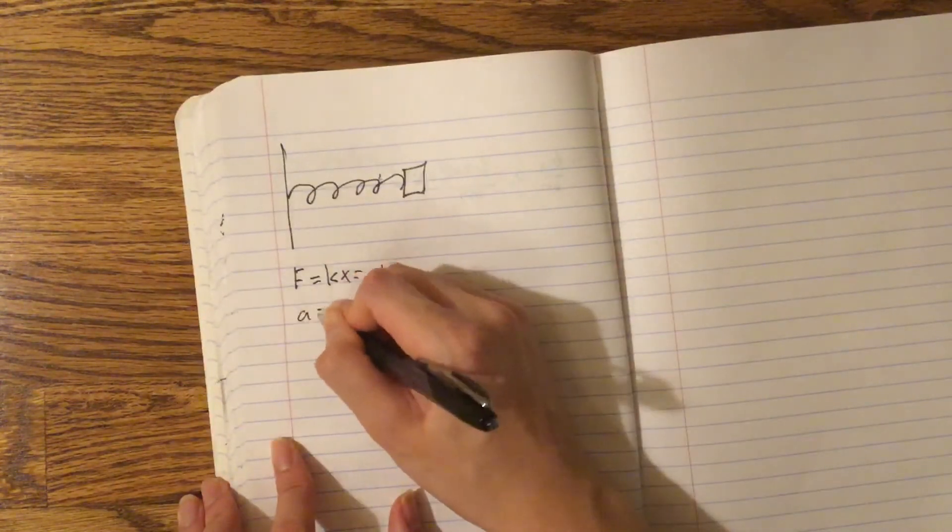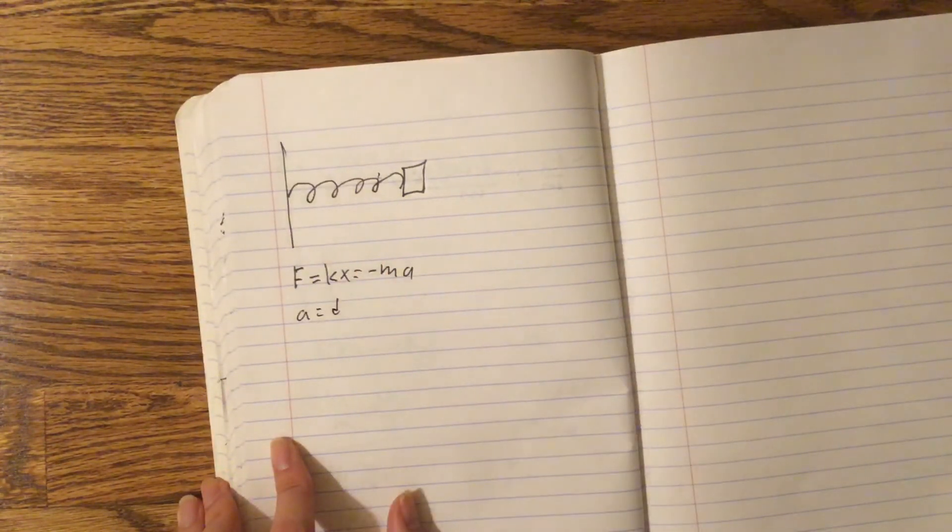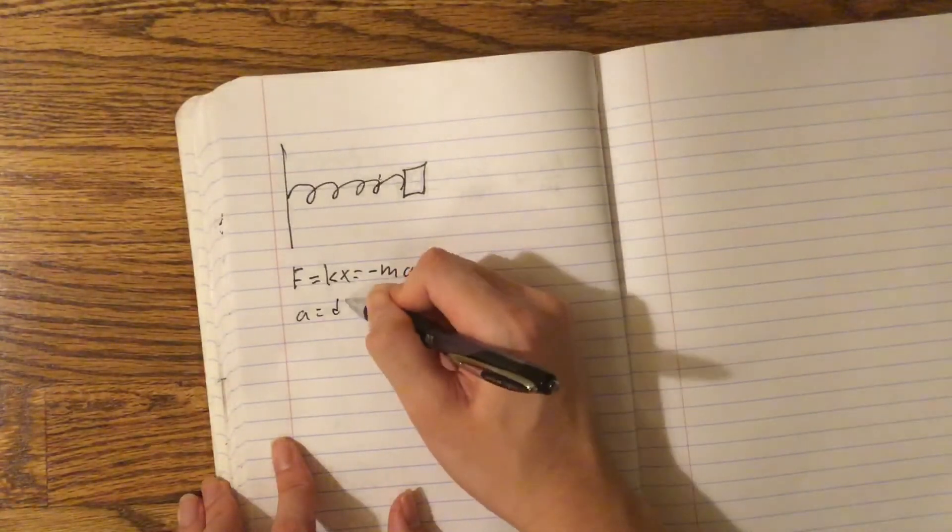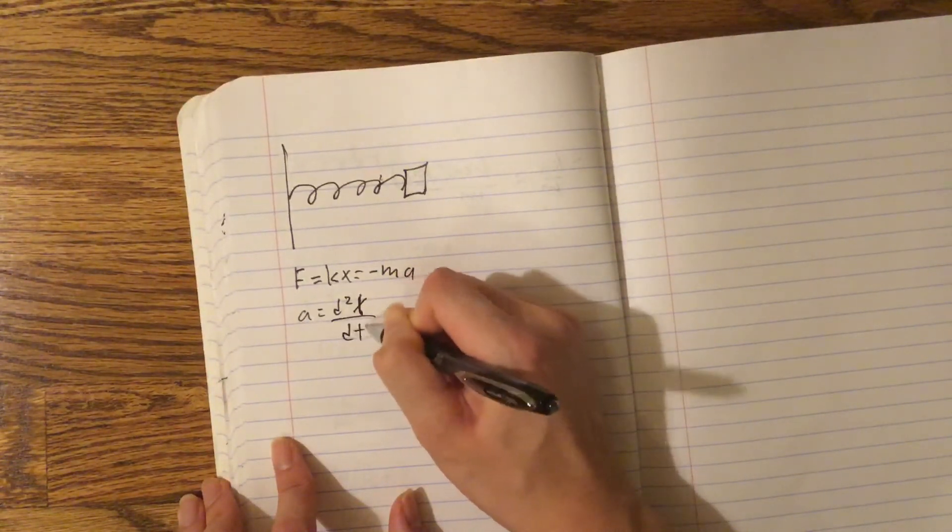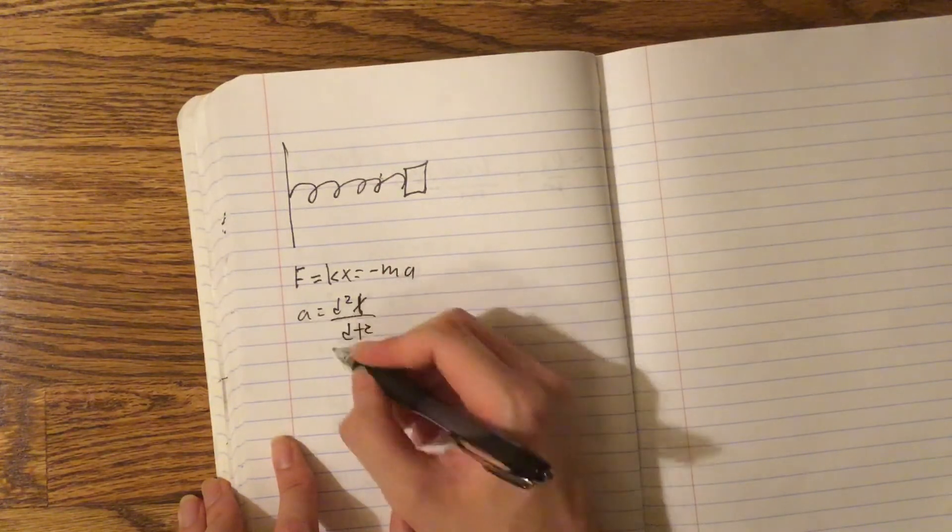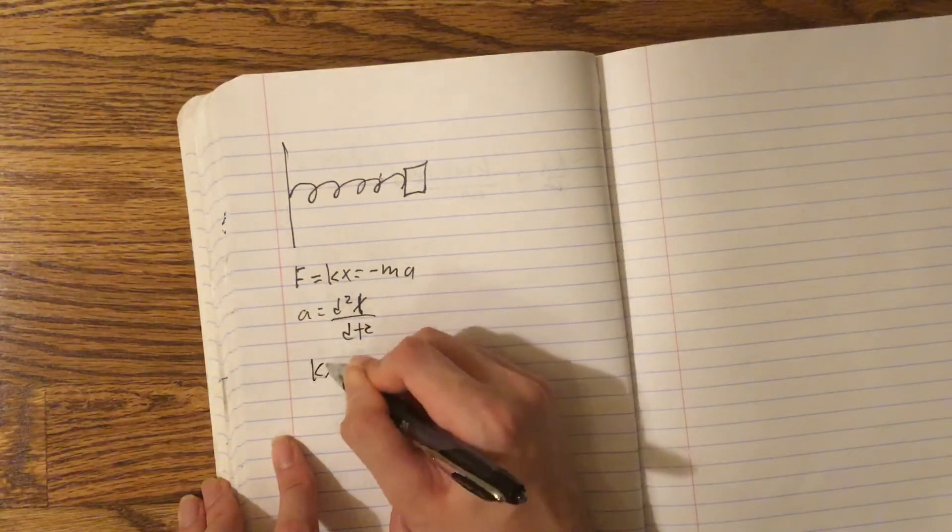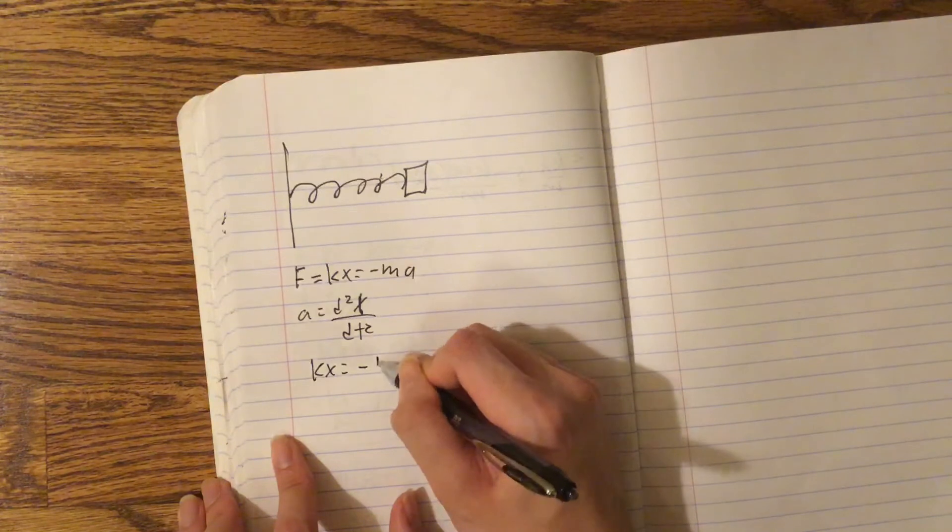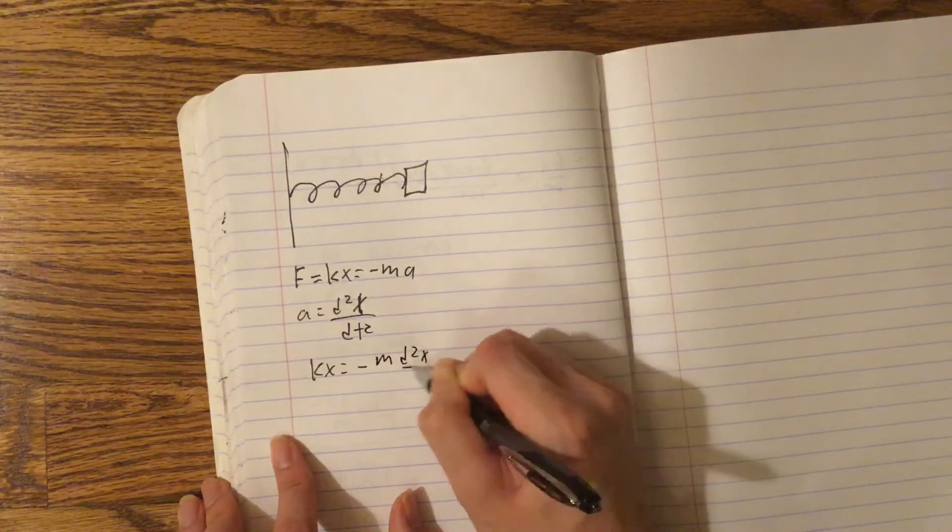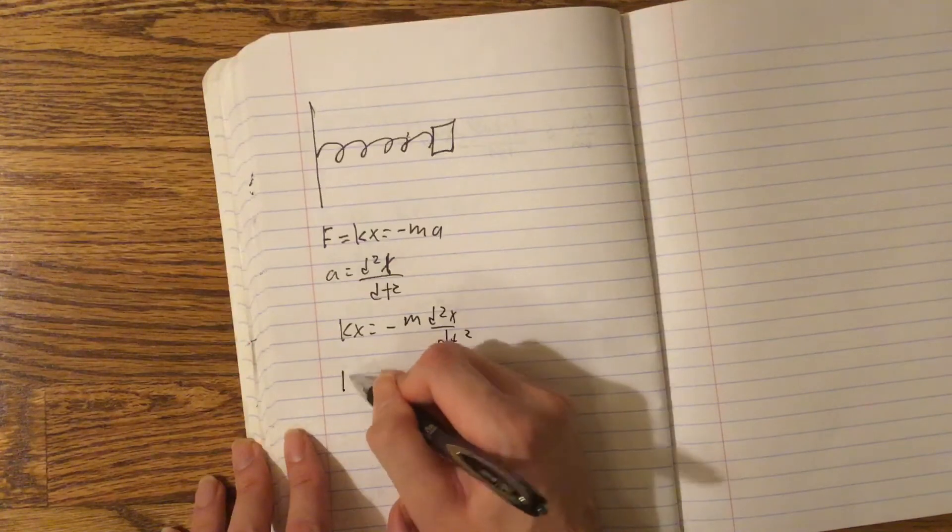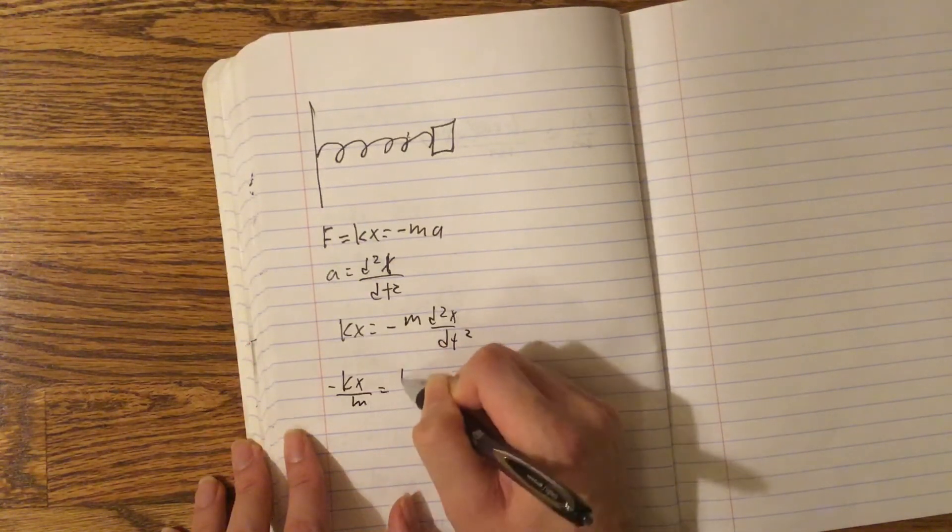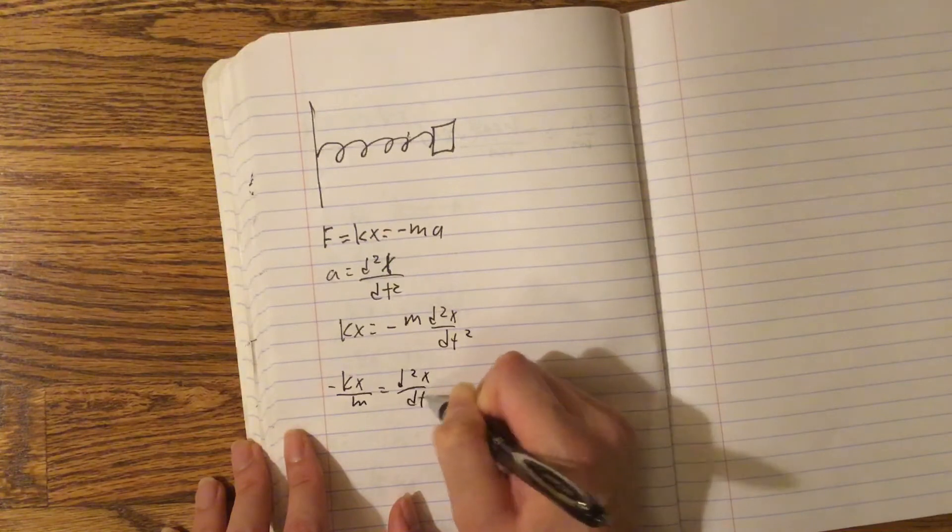Now, a can also equal the double derivative of x. So let's substitute a for that. We get that kx equals negative m d squared x over dt squared. And let's do some rearranging. We get negative kx over m equals d squared x over dt squared.